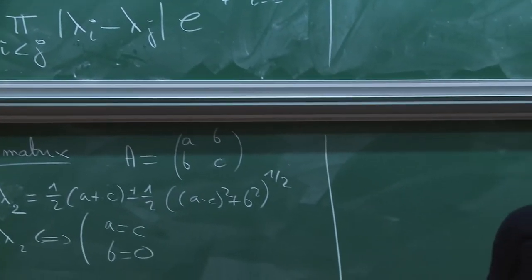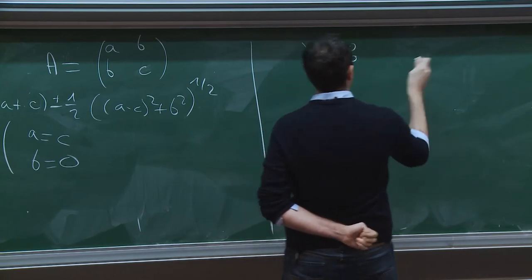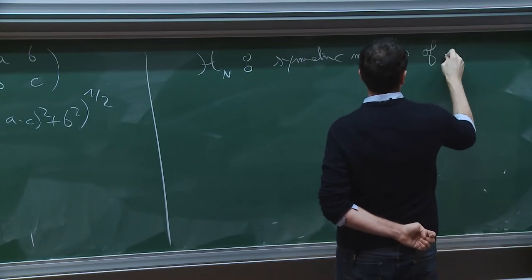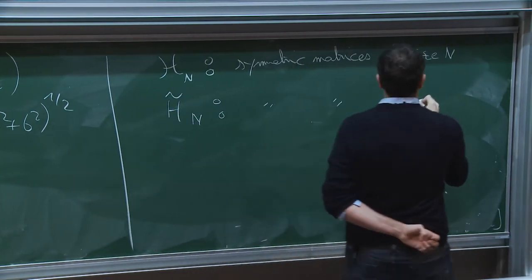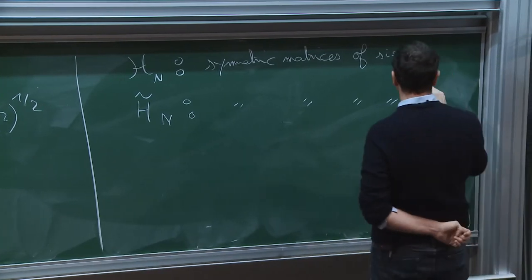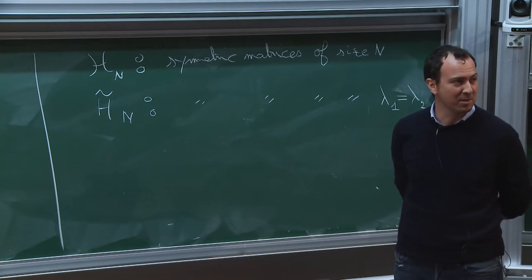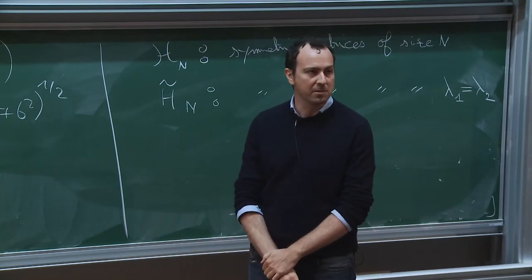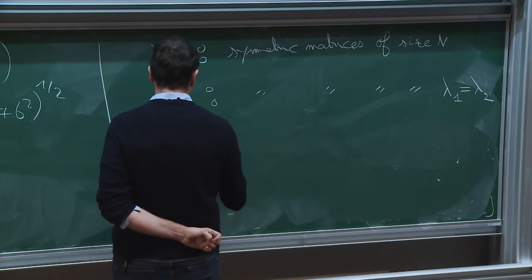It happens that this codimension two is true in any dimension. Imagine you have H_n, the set of symmetric matrices of size n, and let H̃_n be those with some multiplicity in the spectrum. Let's try to understand as a manifold the dimension of H̃_n. For H_n, the dimension is n(n+1)/2. Now imagine choosing a matrix with a multiple spectrum. The first n can be understood as choosing your eigenvalues, but if I have a multiplicity, I just have n-1 choices. Then n-1 is for the first eigenvector on a sphere of dimension n-1.